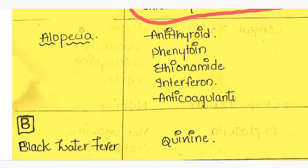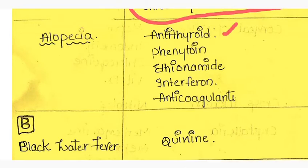Alopecia is caused by antithyroids, phenytoin, ethionamide, interferon, and anticoagulants.